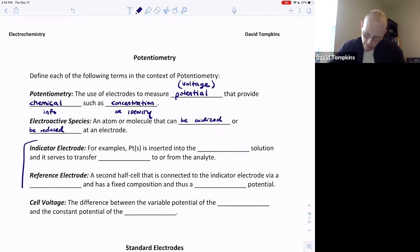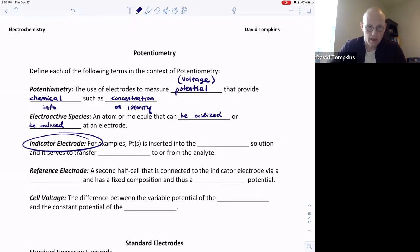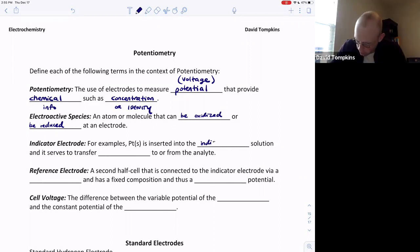There are two electrodes or two half cells in any potentiometry experiment. The indicator electrode is commonly metal such as platinum, and this metal electrode is going to be inserted into the indicator solution. You should think of the indicator as being the unknown solution. That indicator is going to transfer electrons to or from the analyte that is being described.